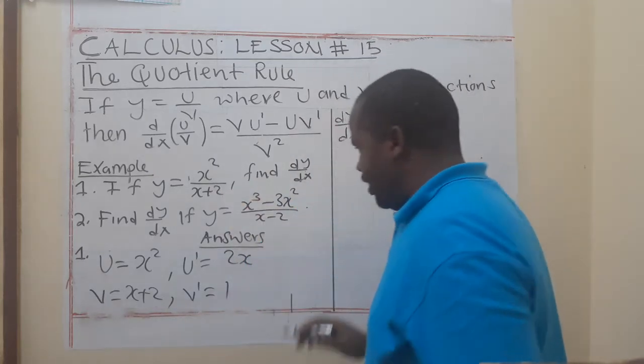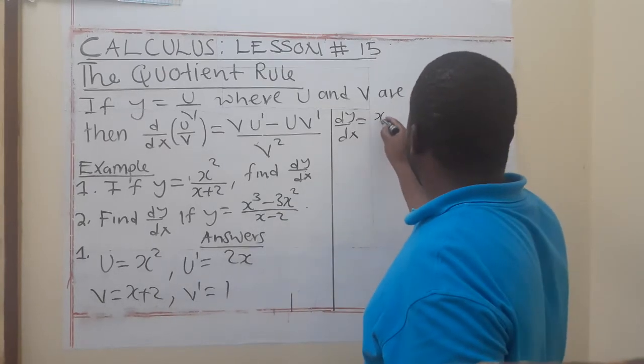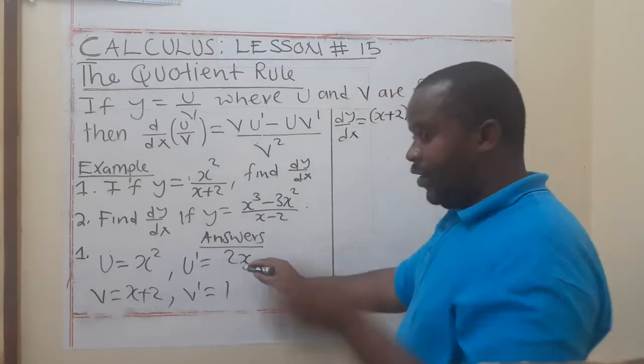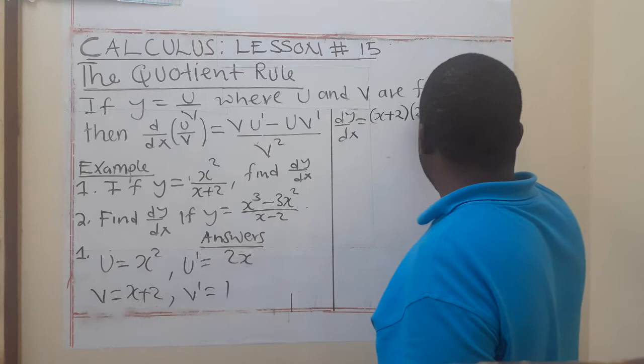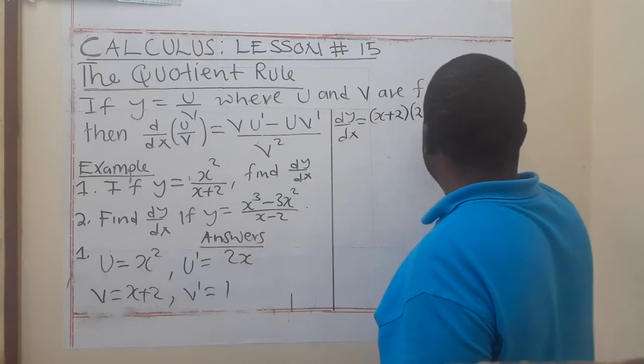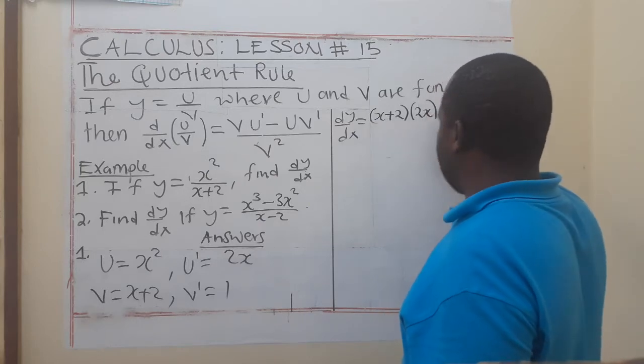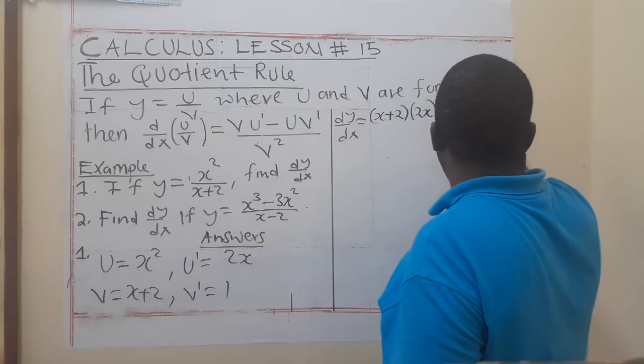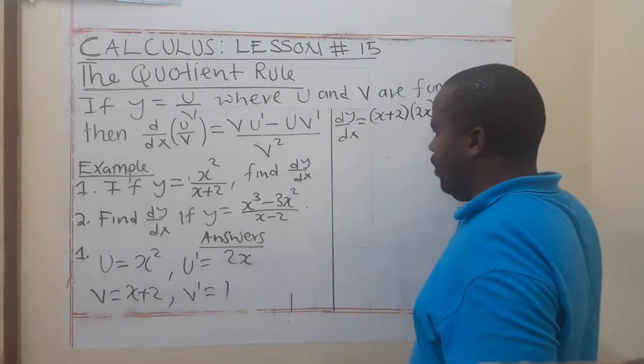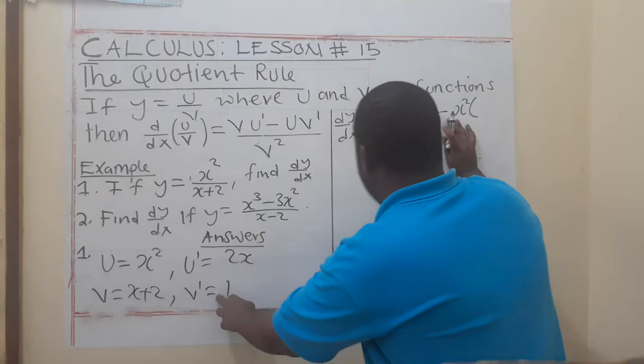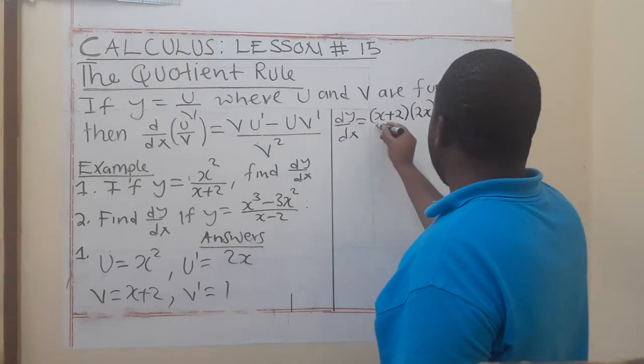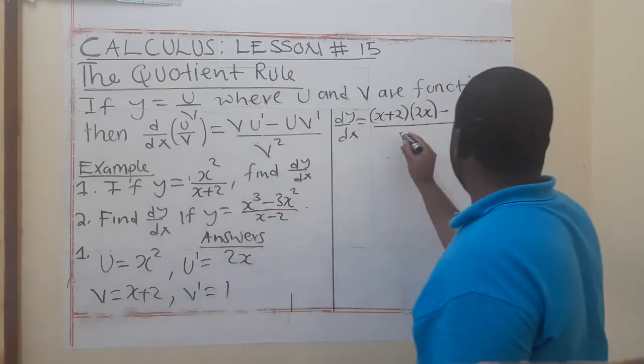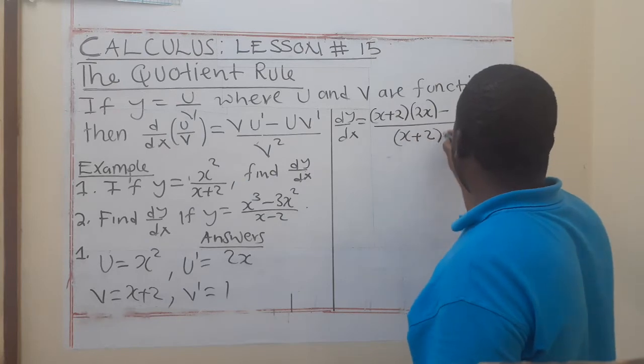Now for us to find dy/dx, you start with v. What is my v? My v is x + 2. You multiply this with u' - what is our u'? It is 2x. So I will say 2x minus. This is v. Here you are going to start with u, which is x squared. If you are dealing with u here, then you deal with v', and your v' is 1. But everything here should be divided by v squared. What is our v? x + 2 to the power 2.